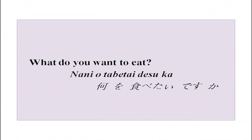Now what we have to do is this form where you would like to know or tell what you want to do — which is the tai form of the verb, which we are going to do right now.